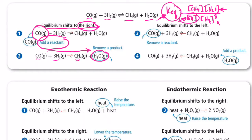We can also shift equilibrium to the left — a shift to the reactant side. In scenario number three, if we remove carbon monoxide that places a stress on the system; we want to replace it. That means my products have to turn into reactants, so I make more CO from my products. We call that a shift left, and of course more H₂ is made as well.